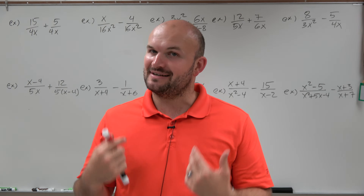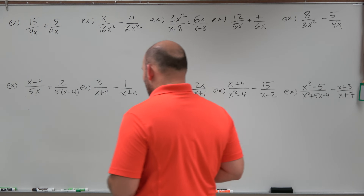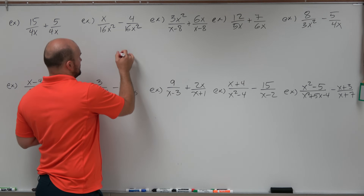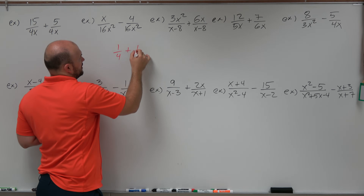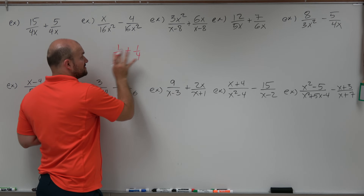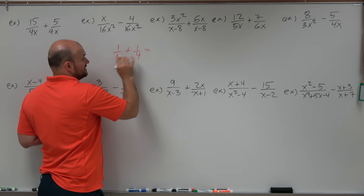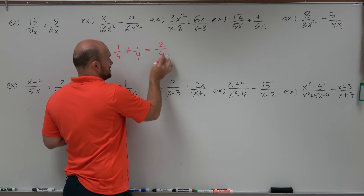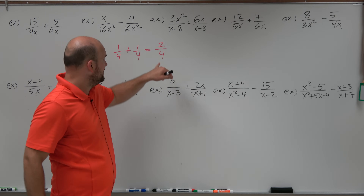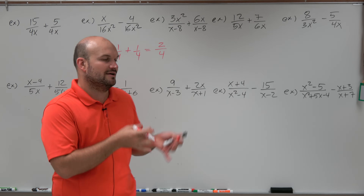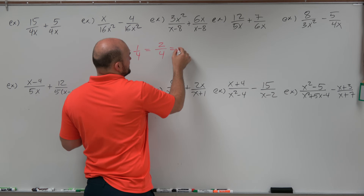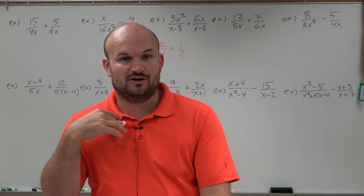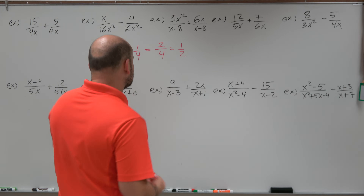We need to make sure we have common denominators. So just remember when we were adding fractions — for instance, 1 fourth plus 1 fourth. The first thing we want to do is add the numerators and leave the denominator the same. Like 1 fourth plus 1 fourth equals 2 fourths. The 2 is how much you have, and the 4 is basically saying everything's being sectioned off. And then we always want to simplify at the end.